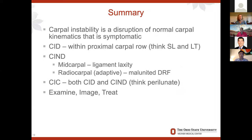In summary: carpal instability is a disruption of the normal carpal kinematics that is symptomatic. The dissociative is within the proximal carpal row — think scapholunate, think lunotriquetral. The non-dissociative: think of either midcarpal, which is ligament laxity, or radiocarpal, which is adaptive — usually from a malunited dorsally angulated distal radius fracture. Carpal instability combined: think of perilunate. Then examine, image, and treat.